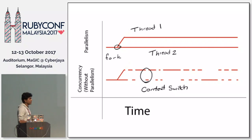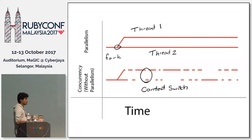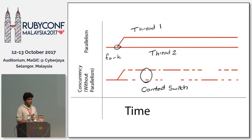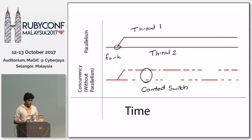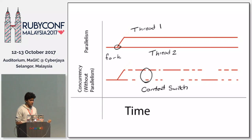In parallel processing we can have multiple threads, and two or more threads can be processed in parallel. But in concurrency without parallelism, we can also have multiple threads, however there will be context switching happening, which will allow only one thread to execute at a given time. Ruby MRI supports concurrency, not parallel processing.